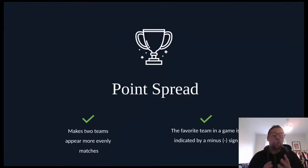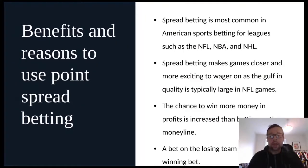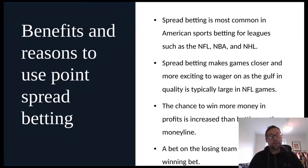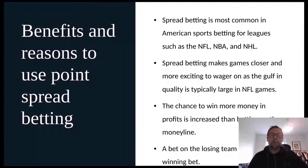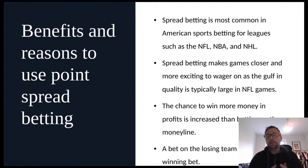One thing to remember is that the favorite team in a game is always indicated by a minus sign, while the underdog is always indicated by a plus sign. This is very common in American sports such as the NFL, NBA, and NHL, as it makes the teams look more closely matched. For example, the Kansas City Chiefs and the Denver Broncos — the Chiefs are one of the best teams in the NFL, the Broncos not so much — so a point spread bet would make these two teams more evenly matched and more attractive for bettors to bet on either side.